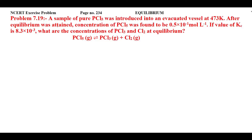In this question, they said that in an evacuated vessel, pure PCl₅ was added, and at that time the temperature was 473 Kelvin. When equilibrium was attained, the concentration of PCl₅ observed was 0.5 × 10⁻¹ mol/L. The equilibrium constant for concentration, Kc, is 8.3 × 10⁻³.